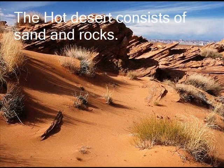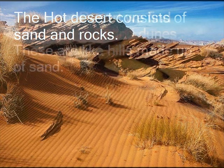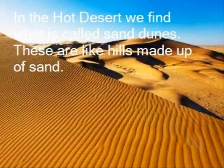The hot desert consists of sand and rocks. In the hot desert, we find what is called sand dunes. These are like hills made up of sand.